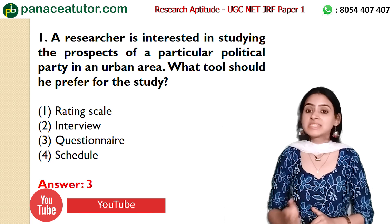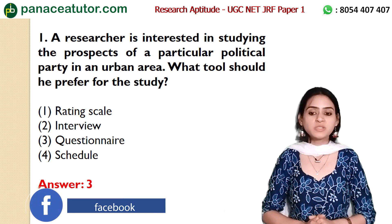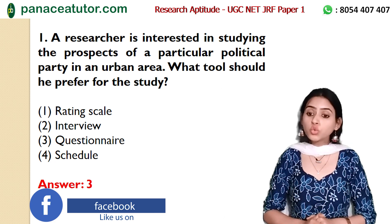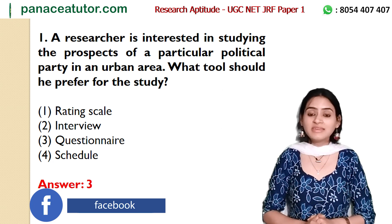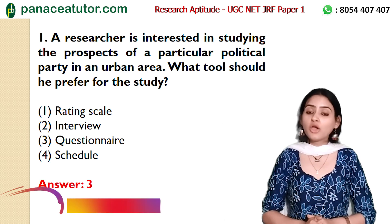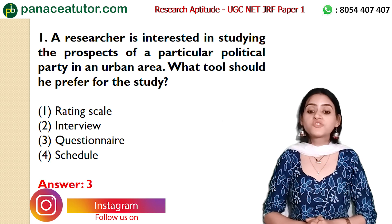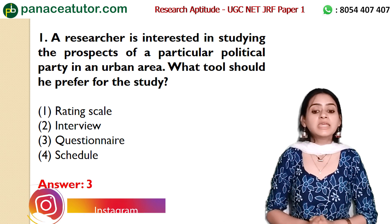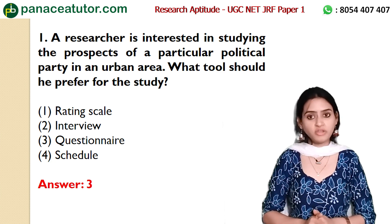The first question is: a researcher is interested in studying the prospects of a particular political party in an urban area. What tool should he prefer for the study? The options are: option 1 rating scale, option 2 interview, option 3 questionnaire, or option 4 schedule. The correct answer is option 3, questionnaire. A researcher studying the prospects of a political party in an urban area should use a questionnaire as the preferable tool.